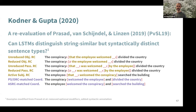These are the sentence types they looked at — I've added annotations so you can see the differences. They all contain very similar vocabulary but have structural differences. Comparing the unreduced object relative clause — 'the conspiracy that the employee welcomed divided the country' — to the active subject relative clause — 'the employee that welcomed the conspiracy searched the building' — you can see the difference between subject and object position.